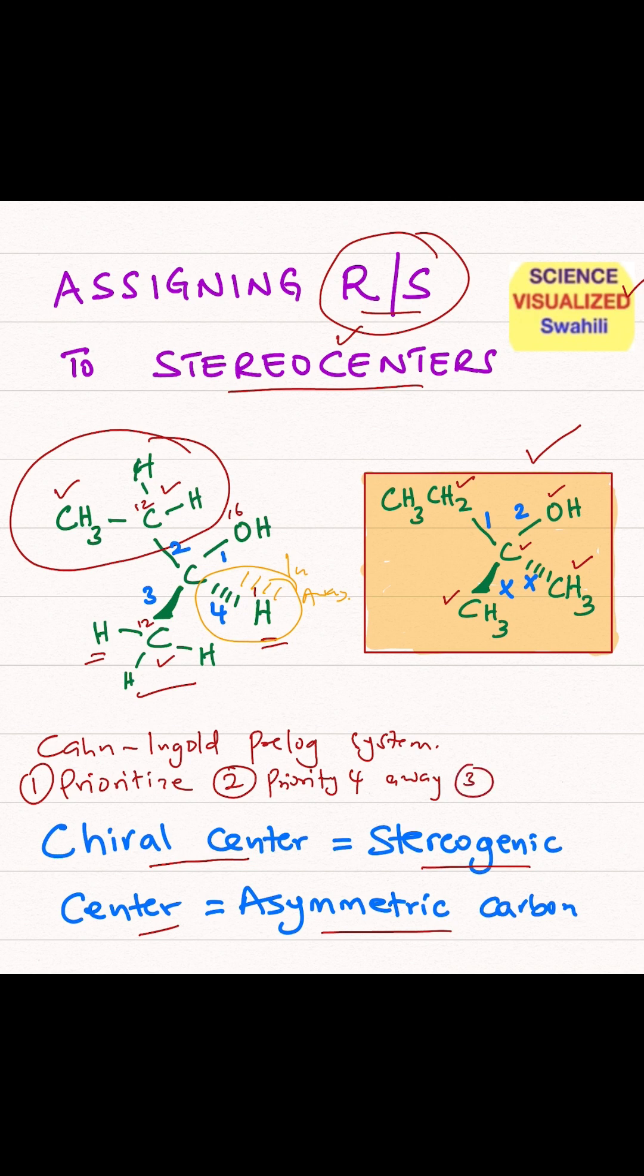Then after that, number three. If the priority increases in a clockwise fashion, that becomes R. If it's in anti or counterclockwise fashion, then that becomes S. Now let's look at the priorities. We have priority number one here, number two, number three. So it's increasing this way, which is basically that. And therefore, that makes that stereocenter S configuration. So that becomes S.